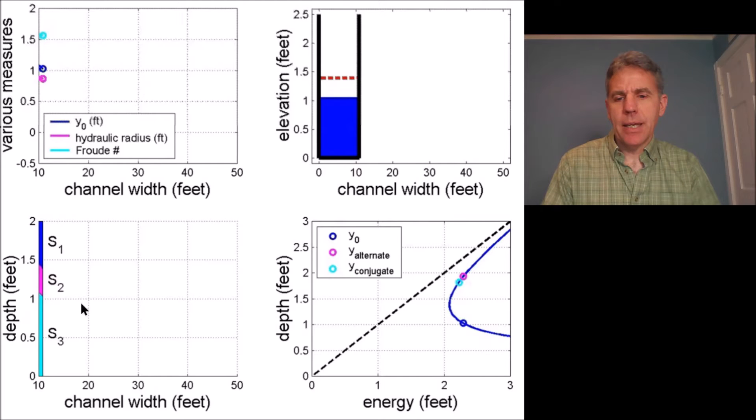In the lower left screen we're showing, again versus channel width, various depth ranges that correspond to the S1, S2, and S3 ranges. So these are the depth range from minimum to maximum where an S1, S2, or S3 curve could reside in terms of actual depth.